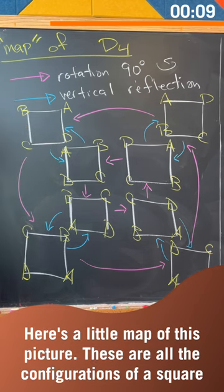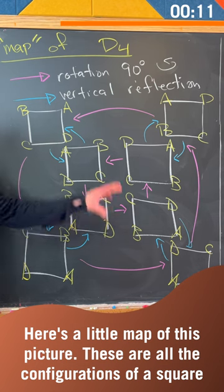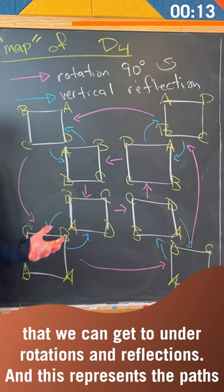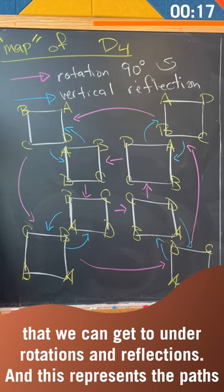Here's a little map of this picture. These are all the configurations of a square that we can get to under rotations and reflections, and this represents the paths.